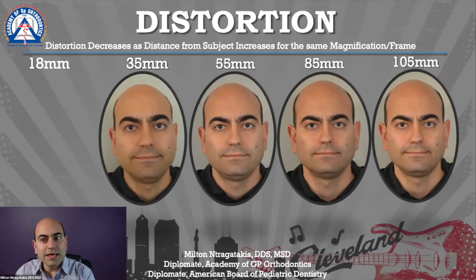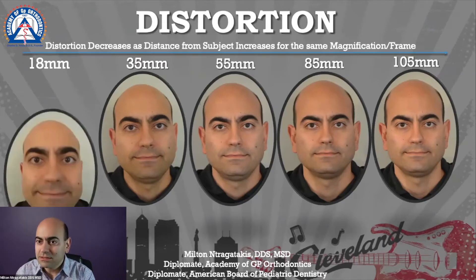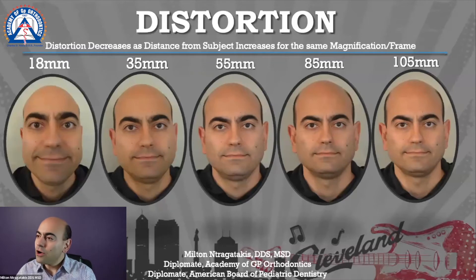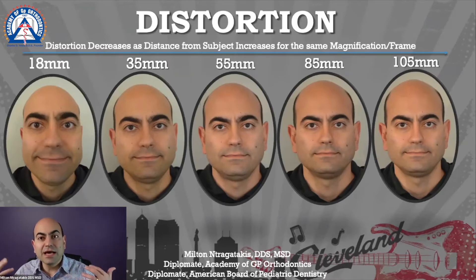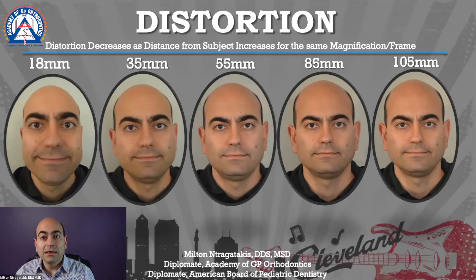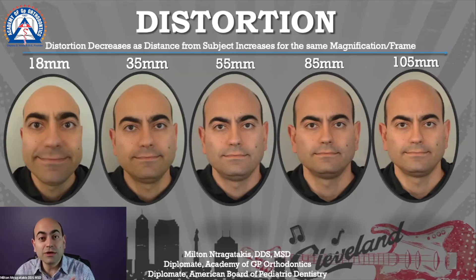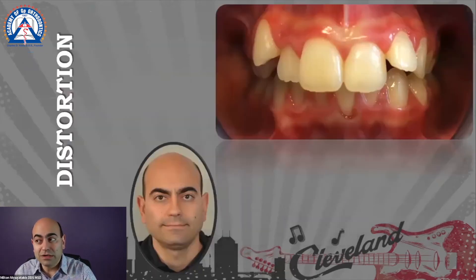At 35 my nose gets a little bigger, and at 18 you can really see the distortion. I certainly don't look like the picture on the left. This is what we call the fish-eye effect. If you're not careful — say you're using your cell phone and you get really close to the patient — you get a face that doesn't represent what the patient actually looks like. Distortion is a real problem if you don't understand photography.